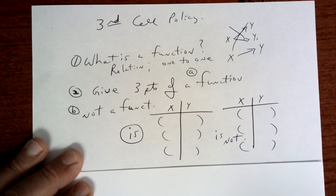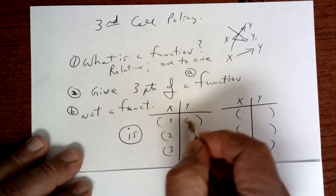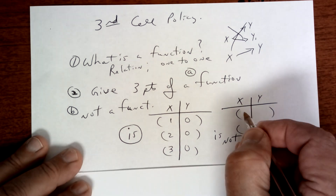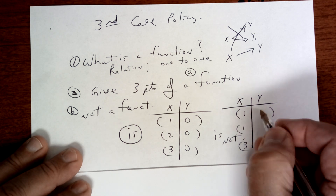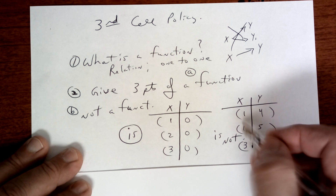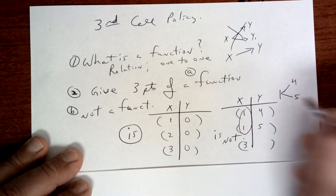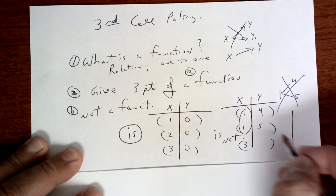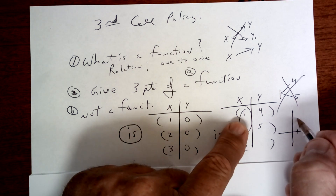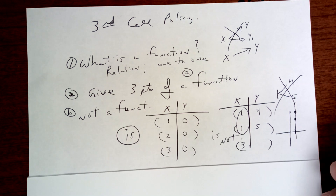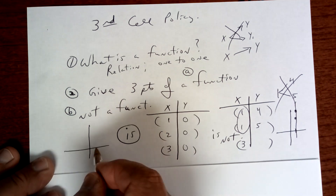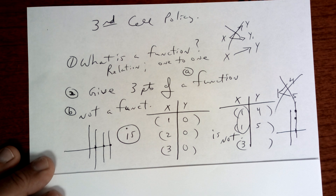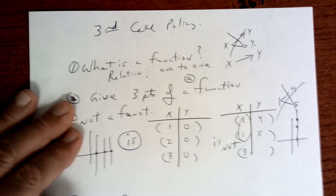Give three points that are a function — you can just make your x values different and that will work. If you duplicate your x values it could be a problem. For example, if one point has x=1, y=4 and another has x=1, y=5, that's not a function — it violates the one-to-one correspondence and fails the vertical line test. But points like (1,0), (2,0), (3,0) pass the vertical line test.